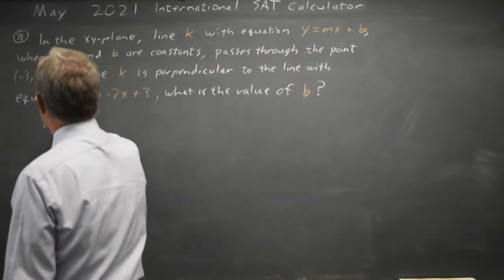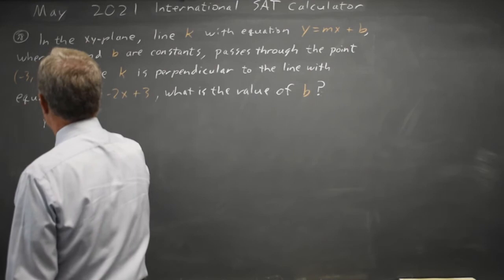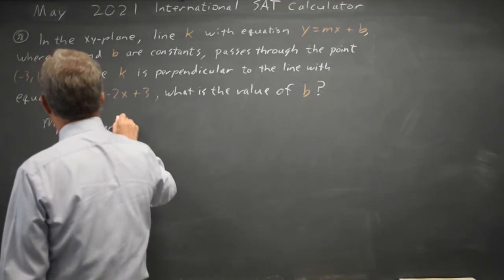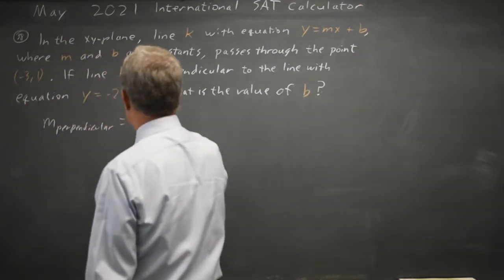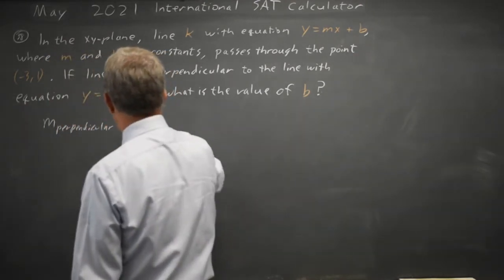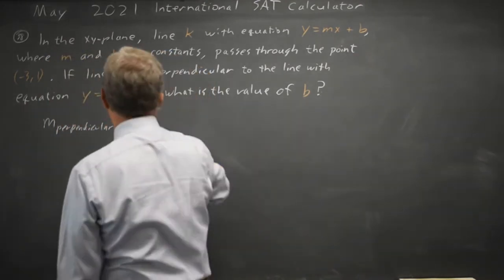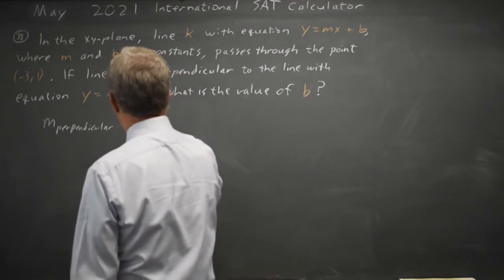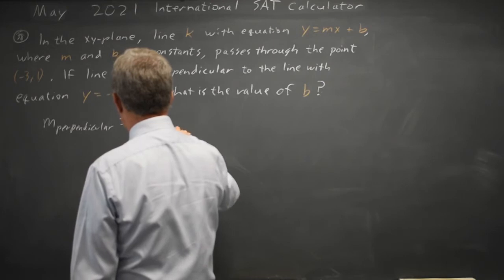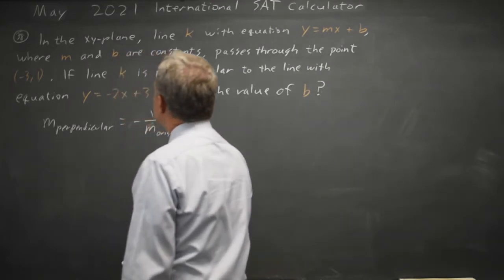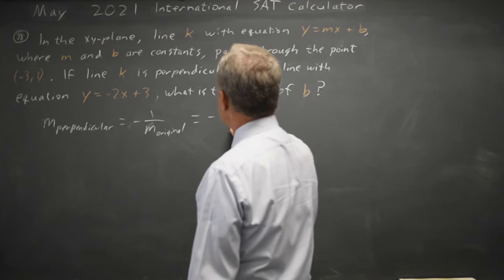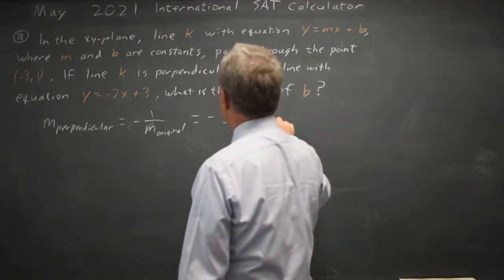The perpendicular slope is equal to negative 1 over the original slope. So in this case that's negative 1 over negative 2, which is positive 1 half.